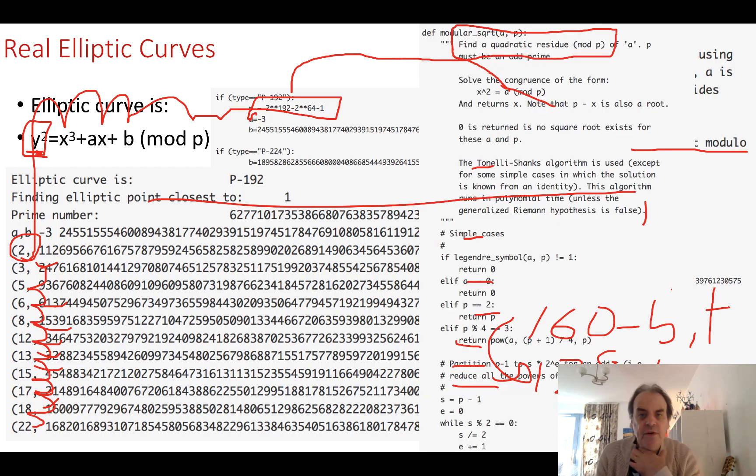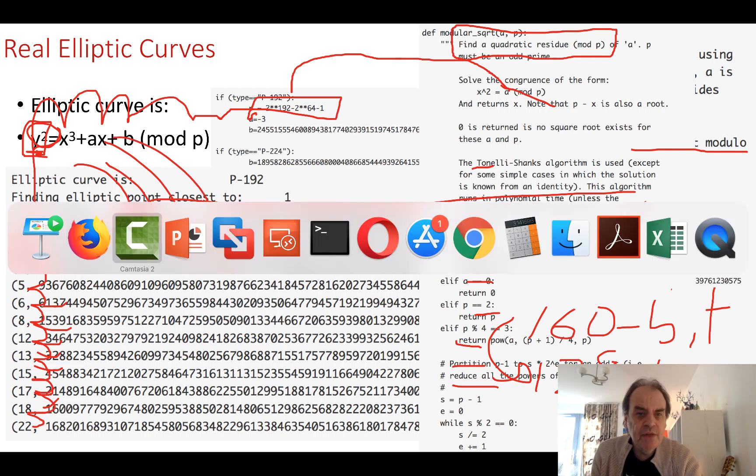Once we have that value, then we can use a modulo square root function such as this one here to calculate what the actual value of y is. In this case, the different values of y that we get. We should be able to have a look at that.